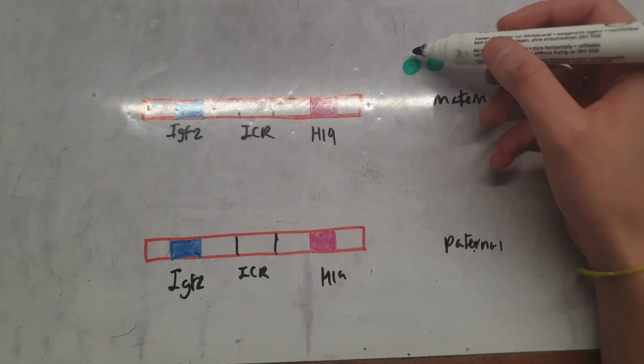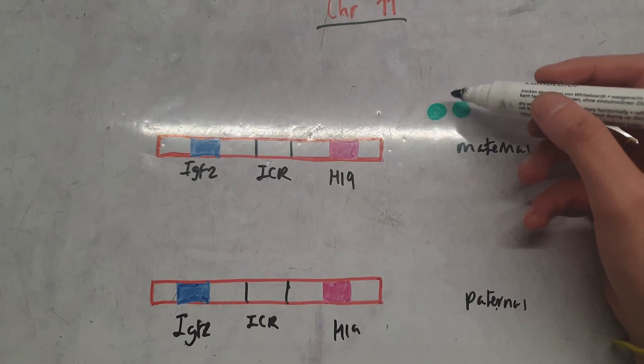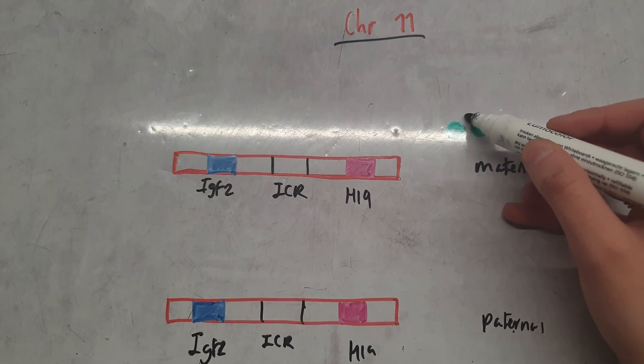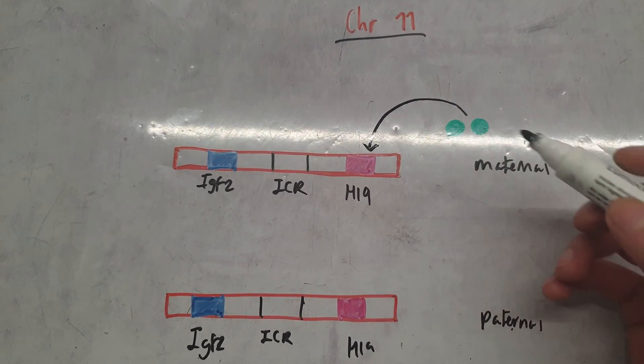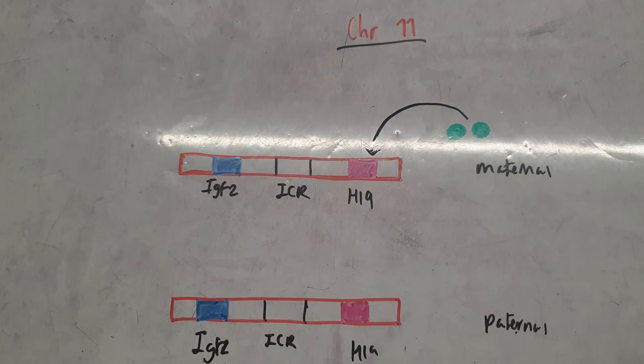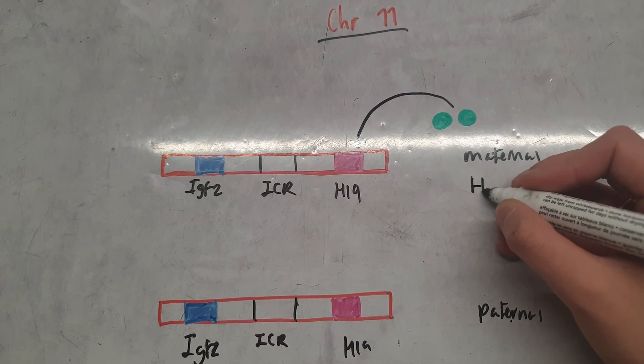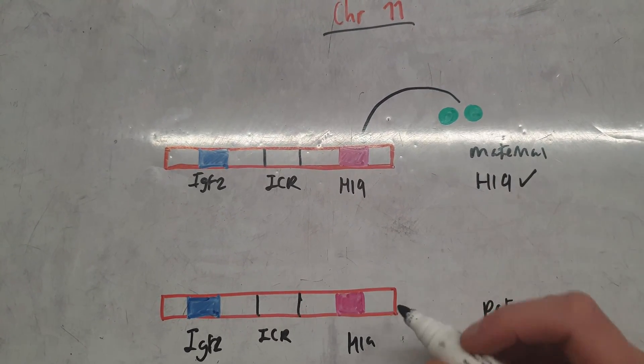This is an enhancer, and this is an activation transcription factor. On the maternal chromosome, this will bind to the H19 gene and cause expression, so we will have H19 expressed from the maternal chromosome.